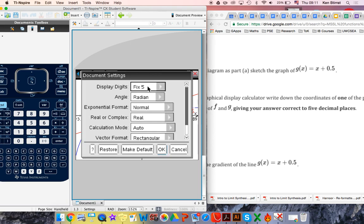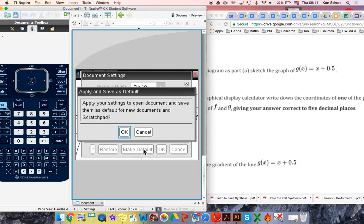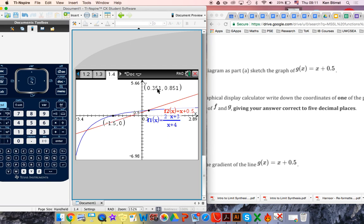So let's go see if we can change the accuracy here. Document settings, Fix 5. Well, I'll try and increase it to fix 10. Make default. Okay. So the problem is, any point of intersection is naturally defaulted to actually three sig figs or three decimal places. If you found a way around that, that's fantastic. There is a way around it because we want to know when G of x equals F of x.